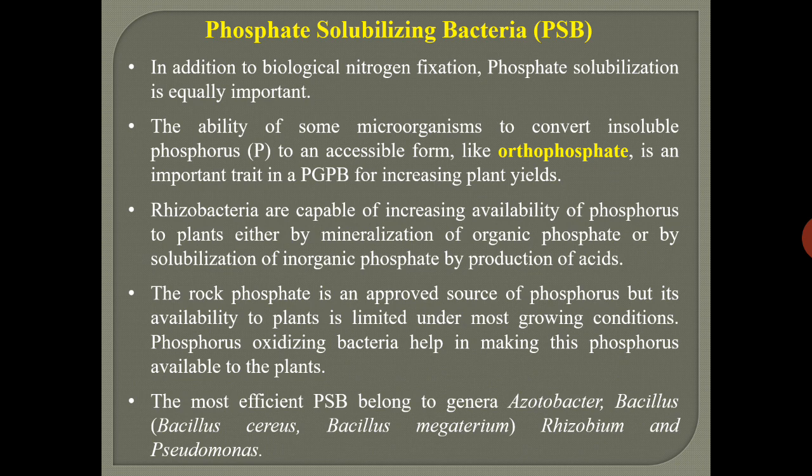PGPR help in solubilizing inorganic phosphate as well as mineralizing organic phosphate, making them available for plants. The ability of microorganisms to convert insoluble phosphorus to an accessible form like orthophosphate is an important trait in plant growth promoting bacteria for increasing plant yields. Rhizobacteria can increase availability of phosphorus by mineralization of organic phosphate or solubilization of inorganic phosphate by producing organic acids. The most efficient phosphate solubilizing bacteria belong to genera Azotobacter, Bacillus (including Bacillus cereus and Bacillus megaterium), Rhizobium, and Pseudomonas.